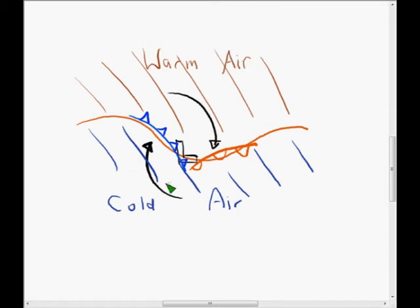Let's color in that low so it's clearer. So what is happening on each of these fronts? You've got the cold air at the cold front pushing underneath the warm air, and at the warm front you've got the warm air riding over the cold air. The cold air is going towards the east, so it's not pushing underneath as it is in the cold front.